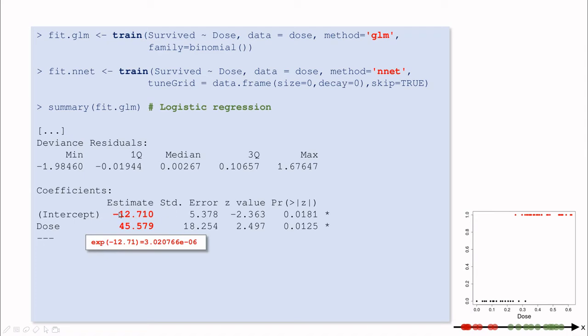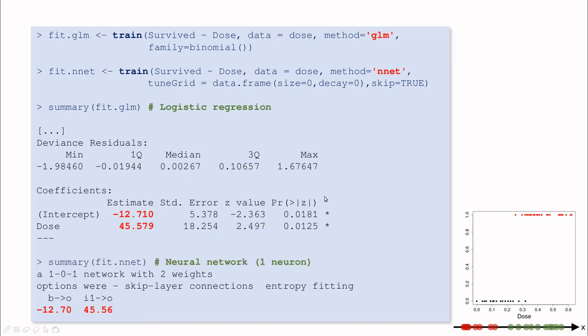If you remember, the exponential of this means that when the dose is zero, basically if we are here, what are the odds of getting cured? And in this case, the exponential of minus 12 is almost three times ten to the minus six. This is three in a million probability of getting cured.